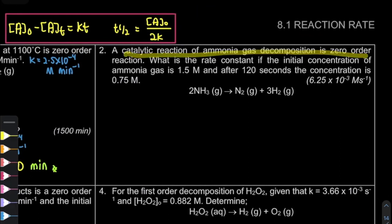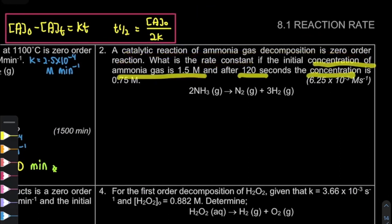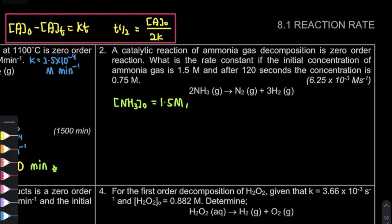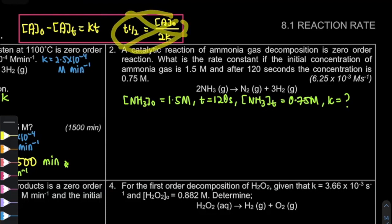Next, question number 2 — again a zero-order reaction. They ask for the rate constant, given the following information. I'm going to extract the values: the initial concentration is 1.5 molar, at time 122 seconds the concentration is 0.75 molar. I will substitute all values into the formula.